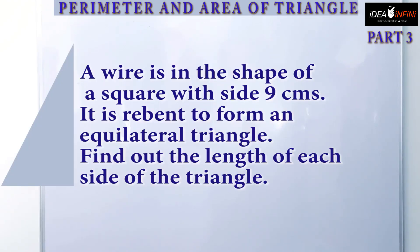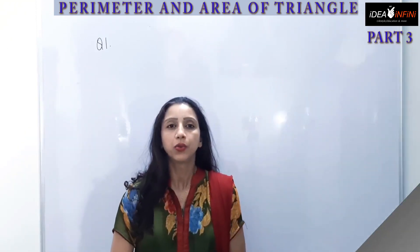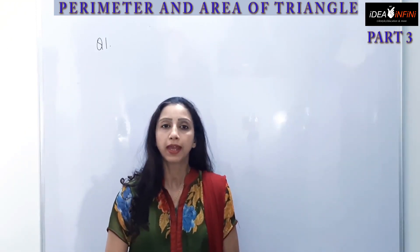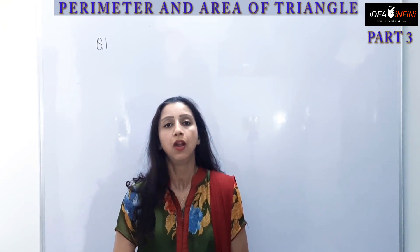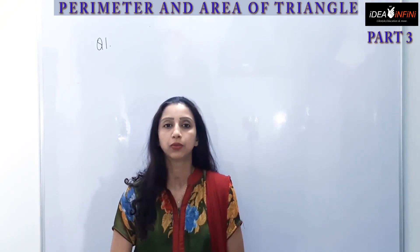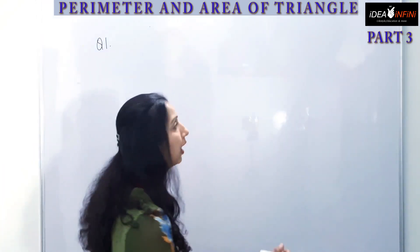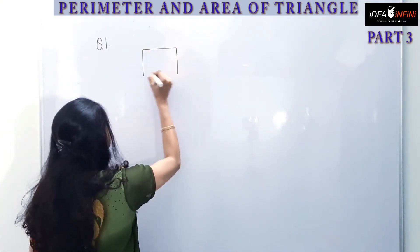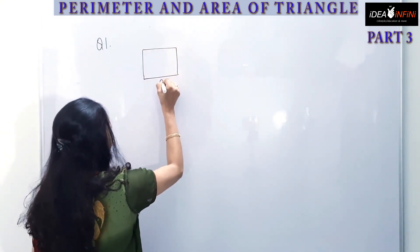First question: a wire is in the shape of a square with side 9 centimeters. It is re-bent to form an equilateral triangle. Find the length of each side of the triangle. We have a wire in the shape of a square of side 9 centimeters, which is then bent to make an equilateral triangle. We need to find the side of the equilateral triangle.